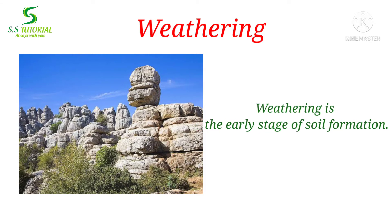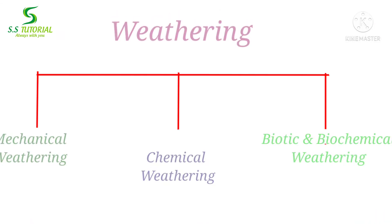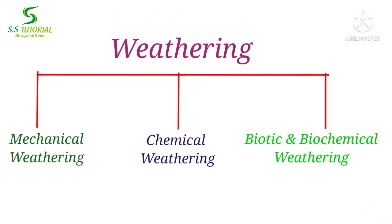Weathering is considered as the early stage of soil formation and it is also considered as the first stage of denudation. That's why we should know briefly about the weathering process. Weathering may be classified into three types: mechanical weathering, chemical weathering, and biotic and biochemical weathering.